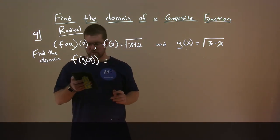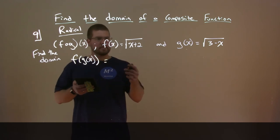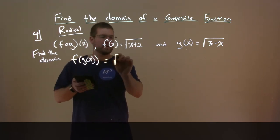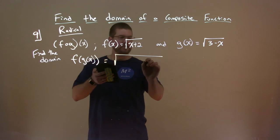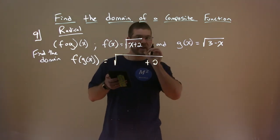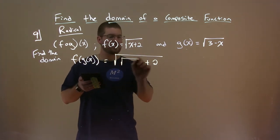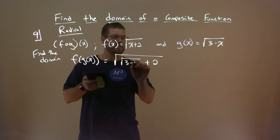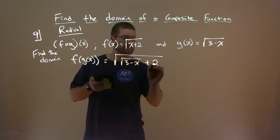So what is f of g of x? Well, if we plug that all in, we have the big square root here, and then we have plus 2 in there. Then g of x goes in for this x, which is another square root of 3 minus x.